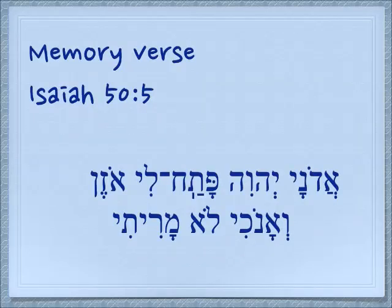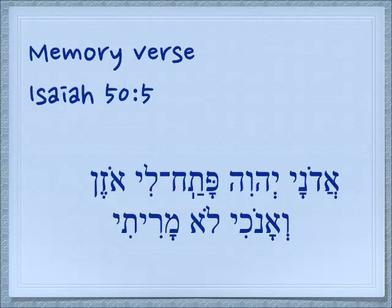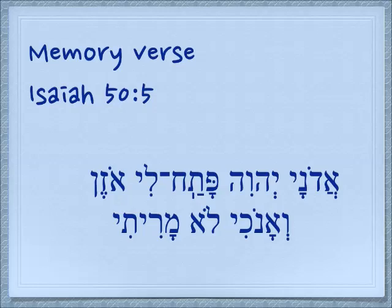Here is our memory verse, Isaiah 50:5. I'll read it, then read it slowly and translate it, then read it again. Adonai Yehovah patach li ozen, ve'anokhi lo mariti. Adonai — Lord, Yehovah — patach — he opened — li — for me — ozen — ear — he opened my ear — ve'anokhi — and I — lo — did not — mariti, rebel. When God opens our ears, we should listen and be obedient. Again: Adonai Yehovah patach li ozen, ve'anokhi lo mariti.